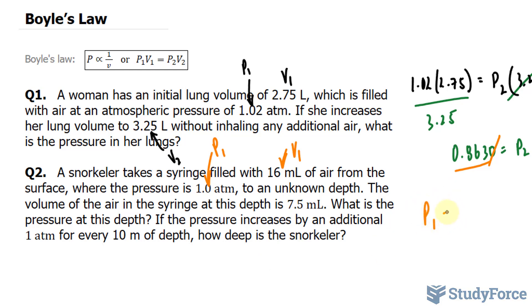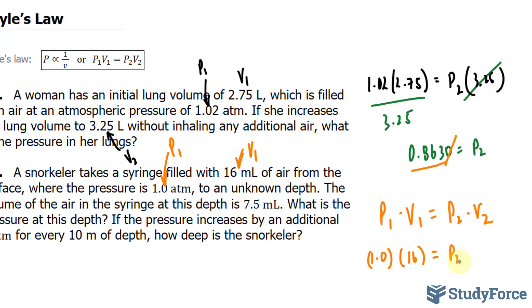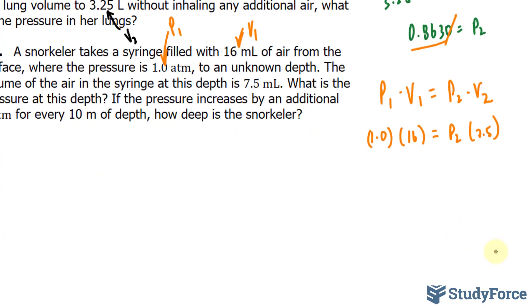We have P1 times V1 is equal to P2 times V2. Let's fill this in. 1.0 times 16 is equal to P2, which is what we're looking for, times 7.5. All we do is divide both sides by 7.5, and we have 16 over 7.5. Ignore that 1, because it's multiplying by 1, it doesn't do anything.